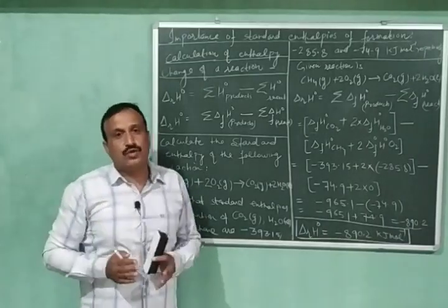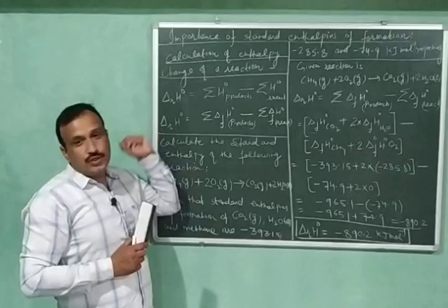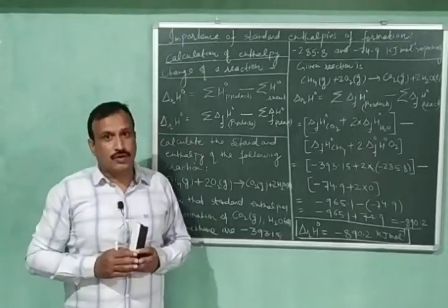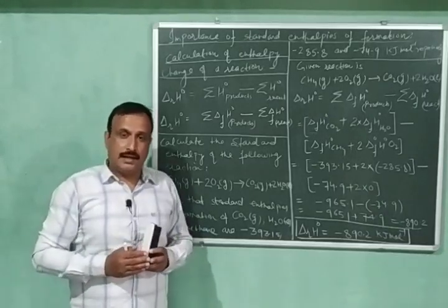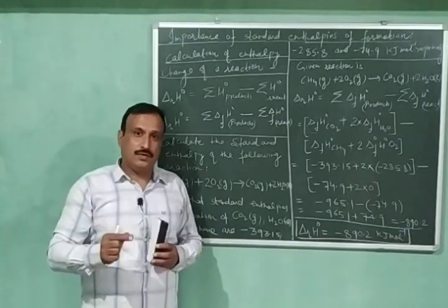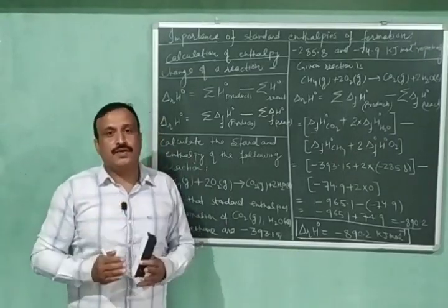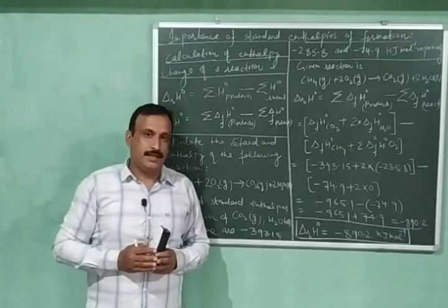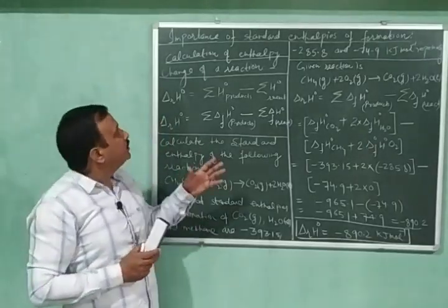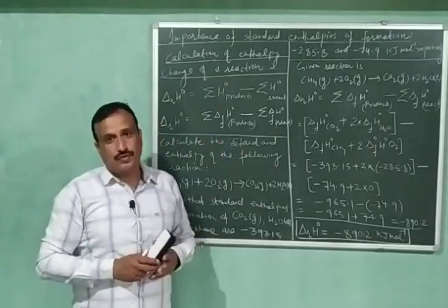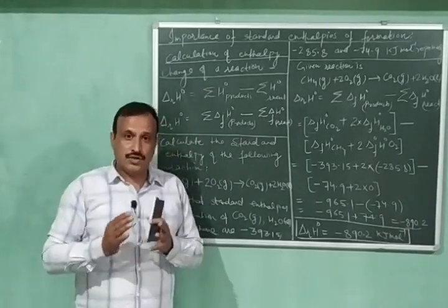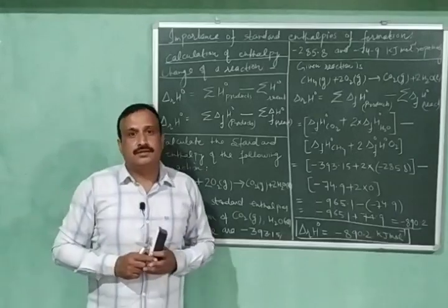In this way we can calculate the standard enthalpy change of a reaction by knowing the standard enthalpies of formation of different reactants and products, and by following the convention that the standard enthalpy of formation of every element in its most stable state is taken as 0. This is the importance of standard enthalpies of formation. Please keep watching, like, share, and subscribe. Thank you.